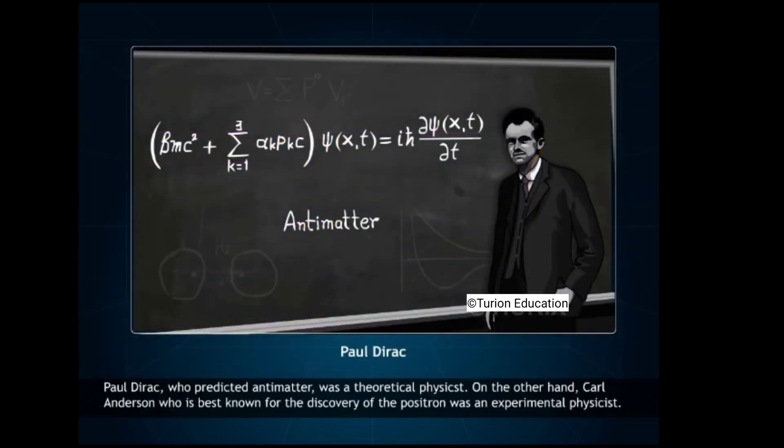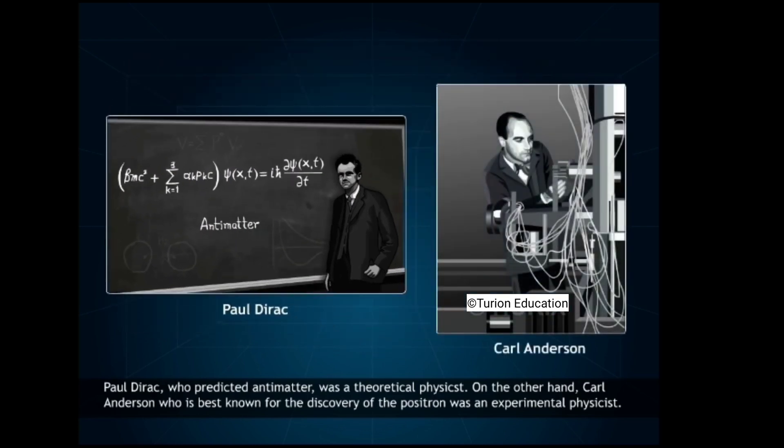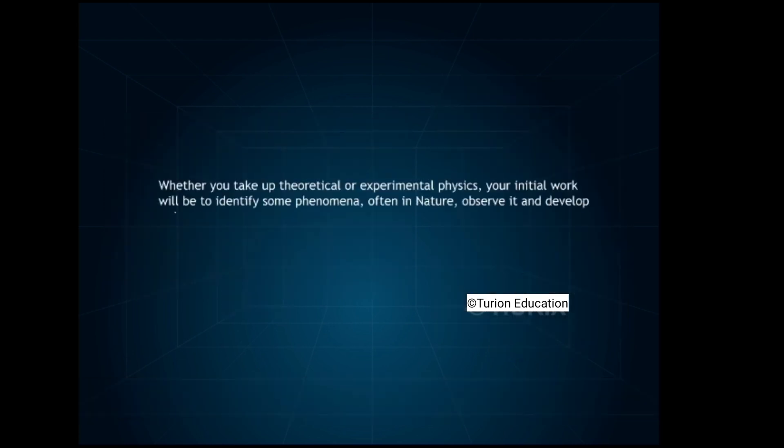Paul Dirac, who predicted antimatter, was a theoretical physicist. On the other hand, Karl Anderson, who is best known for the discovery of the positron, was an experimental physicist. Whether you take up theoretical or experimental physics, your initial work will be to identify some phenomena, often in nature, observe it and develop a theory.